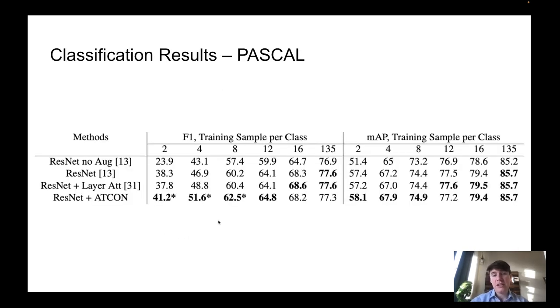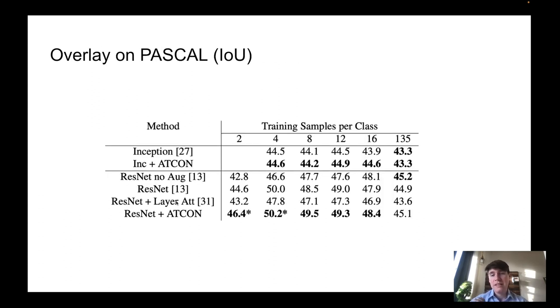These are some classification results with varying training dataset size with varying number of training sample per class. And you can see that the F1 and mean average precision improve when the datasets are small. This is also true for the overlap between the proposed detected object and the actual ground truth objects, where the performance of the weakly supervised detection improves when the datasets are small.